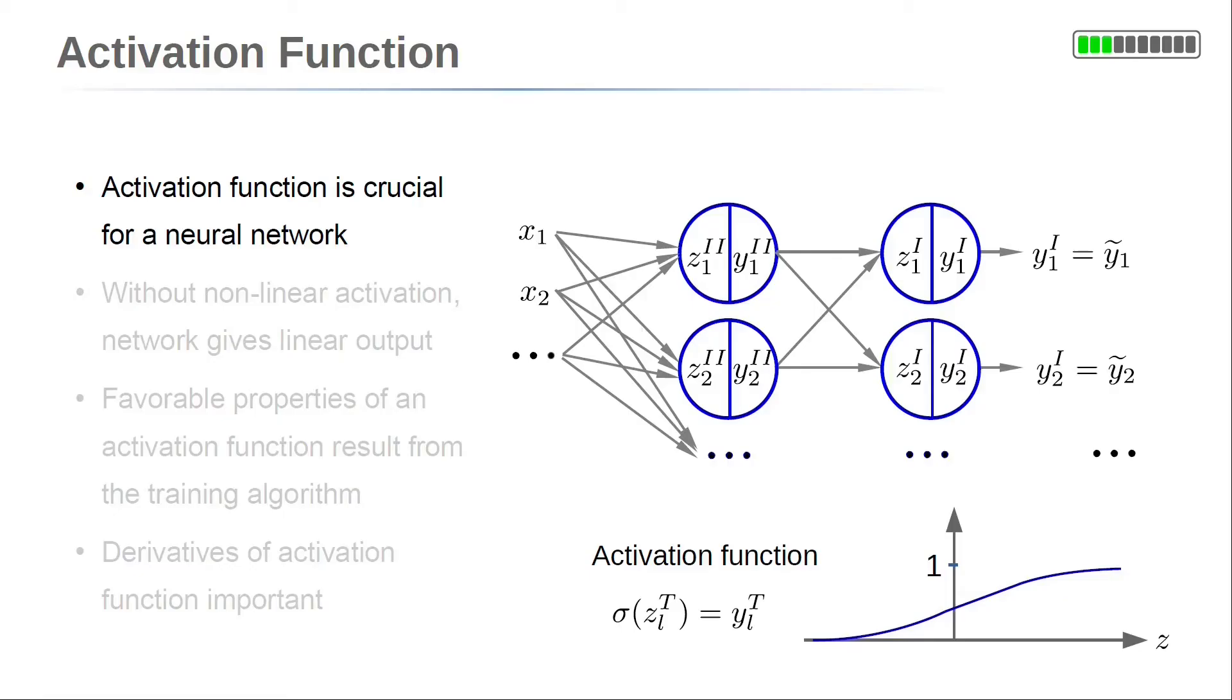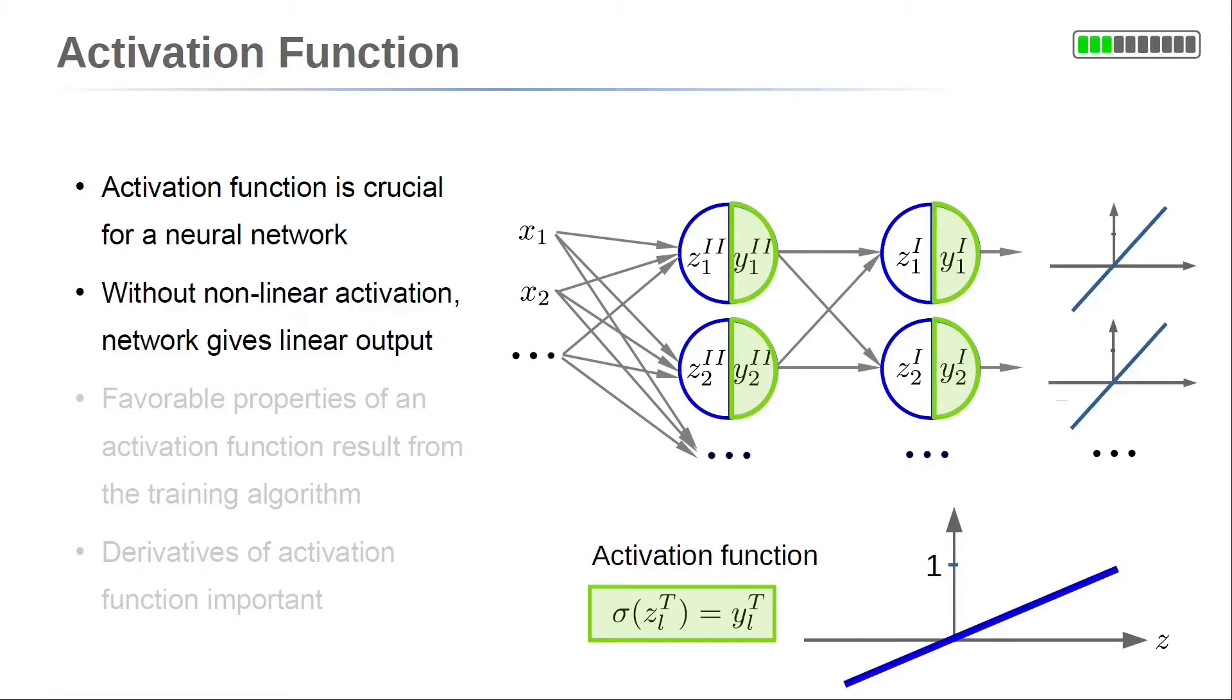The activation function is a crucial component for a neural network. It determines the output of every single neuron. Without it, a neural network calculates all the linear combinations. They are summed up,